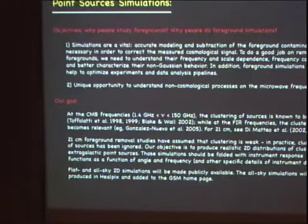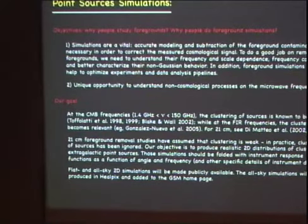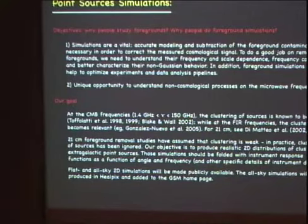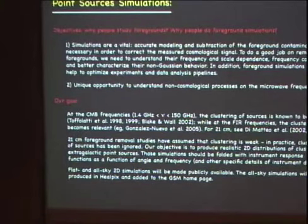One of the results from CMB studies is that around CMB frequencies, clustering is not an important thing. But if you go to far infrared point sources, this becomes a really big problem. There are many references from Toffolati, De Zotti, and others about this — with SCUBA data and so on. But recently, we started to get interested in 21 centimeters, and you can find some older papers saying that even though we don't have a deep survey, this is a problem you should at least think about — it can be a jack-in-the-box.